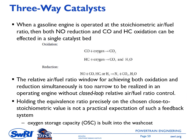When a gasoline engine is operated at the stoichiometric air-fuel ratio, both NOx or NO reduction and CO and HC oxidation can be accomplished in a single catalyst bed. This is the mechanism for CO oxidation, HC oxidation, and NO reduction. CO is oxidized to CO2, HC is oxidized to CO2 and water vapor, and for NO reduction, N2 is produced. To have this catalyst operate effectively, we need a stoichiometric air-fuel ratio, which means there is a very narrow window to realize the operation of this three-way catalyst.